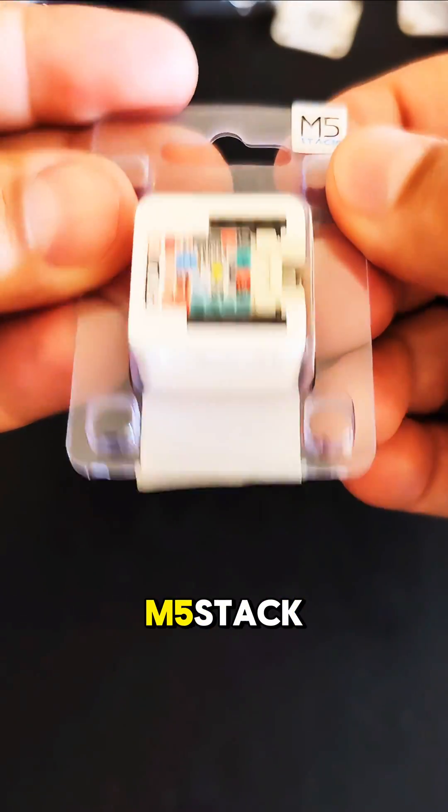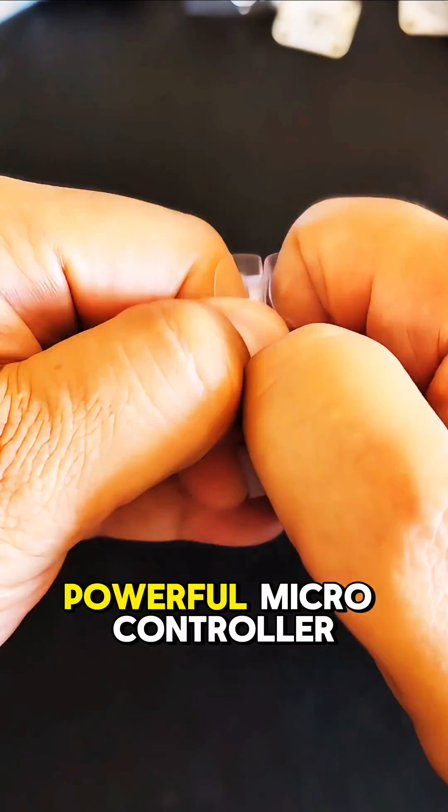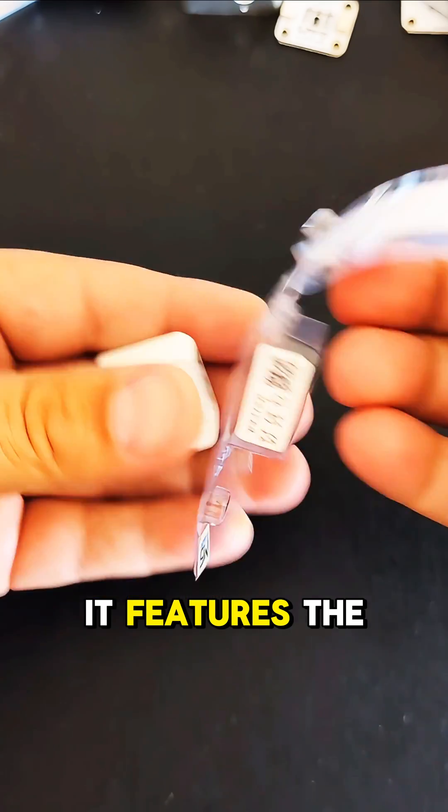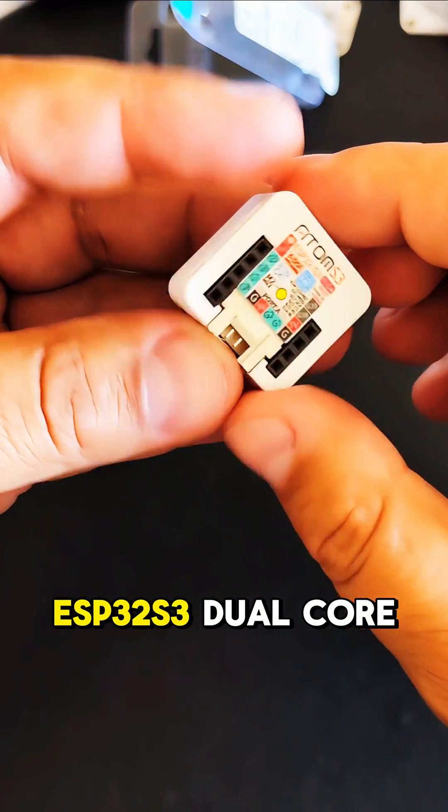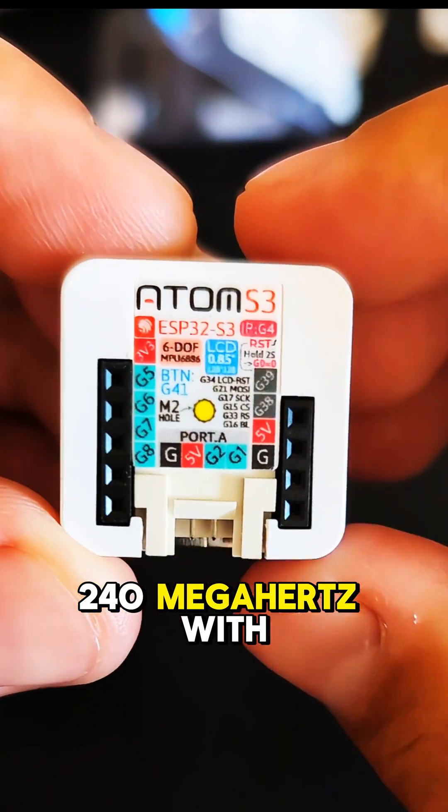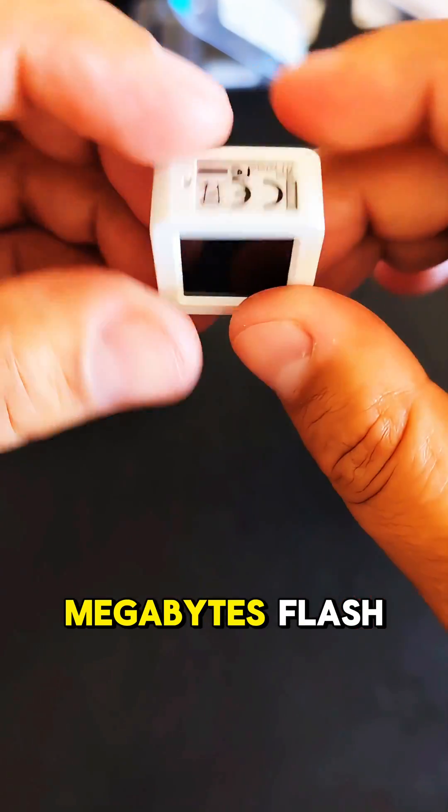This is the Atom S3 from M5Stack, a small yet powerful microcontroller. It features the ESP32-S3 dual-core 240 MHz with 512 KB SRAM and 8 MB flash.